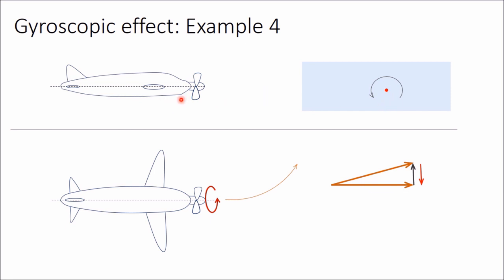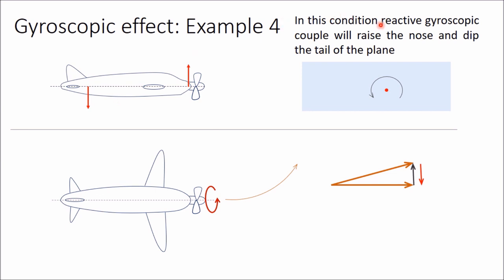So one anticlockwise couple will act in this plane, which will try to raise the nose and dip the tail of this aeroplane. In this condition, the reactive gyroscopic couple will raise the nose and dip the tail of the plane.